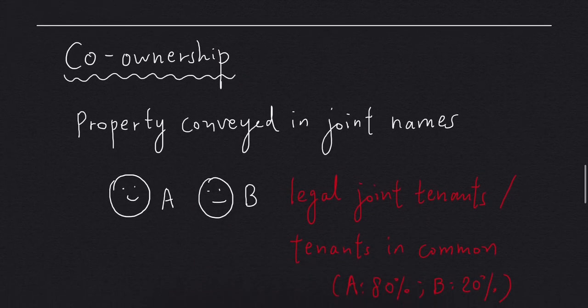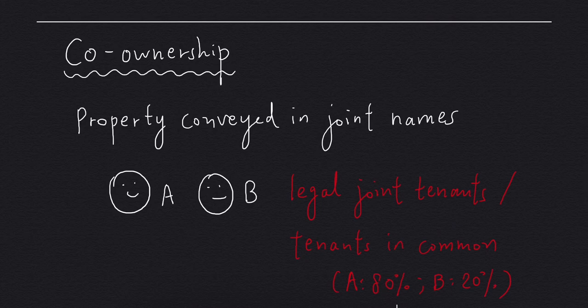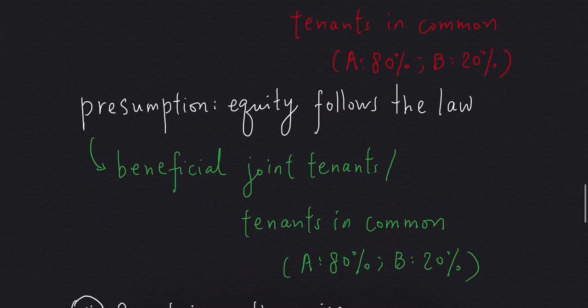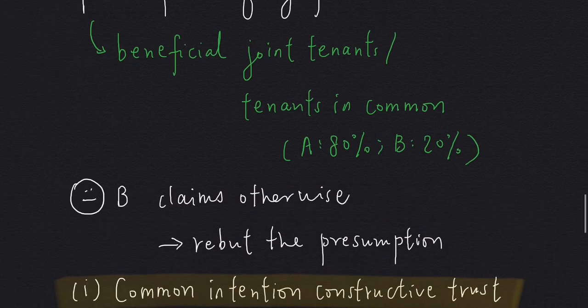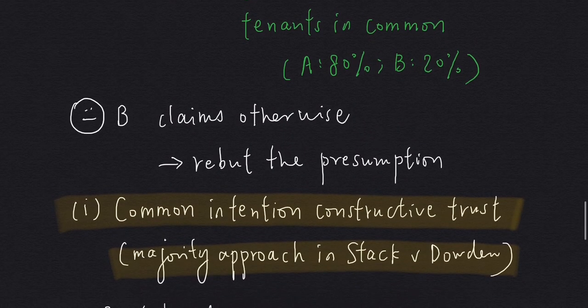Moving on to the co-ownership context. This time, we have a property that is conveyed in the joint names of A and B. So A and B can be legal joint tenants or tenants in common — let's say A has 80% and B has 20% of the interest. For the position in equity, the presumption of equity follows the law applies, so A and B may be beneficial joint tenants or tenants in common with the same amount of shares. Let's say B claims otherwise — so again, B has to rebut the presumption of equity follows the law. There are two approaches.